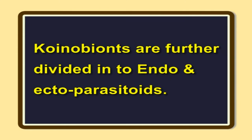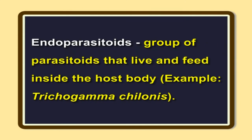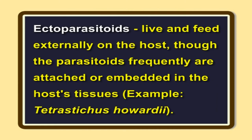Koinobionts are further divided into endo- and ecto-parasitoids. Endo-parasitoids are a group of parasitoids that live and feed inside the host body. Example: Trichogramma chilonis. Ecto-parasitoids live and feed externally on the host, though the parasitoids are frequently attached or embedded in the host's tissues. Example: Tetrastichus howardii.